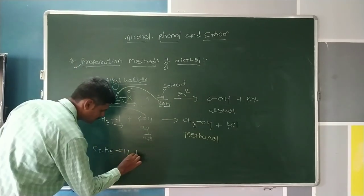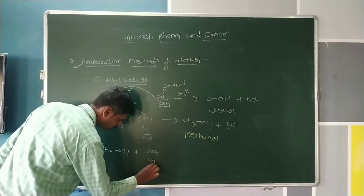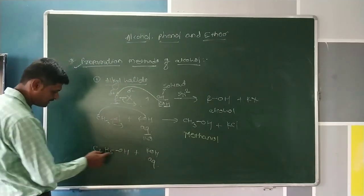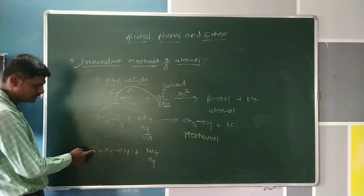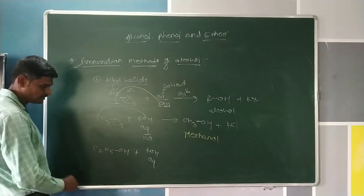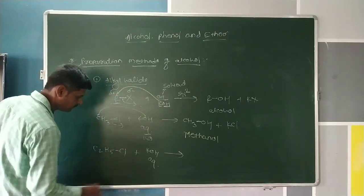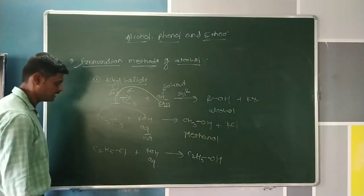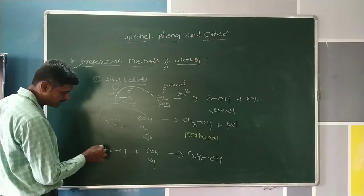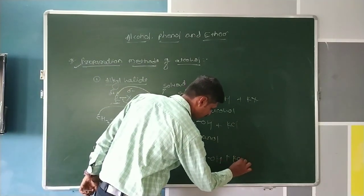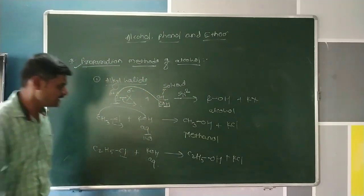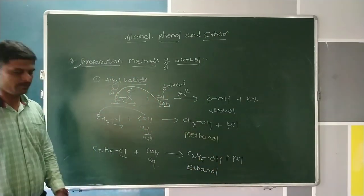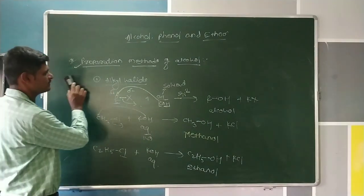Another example: ethyl chloride (C₂H₅Cl) is reacted with KOH in aqueous medium. The OH⁻ acts as a nucleophile and attacks on the alpha carbon atom. After that the Cl⁻ is eliminated. The remaining Cl⁻ and K⁺ combine with each other. The product formed in this case is ethanol.